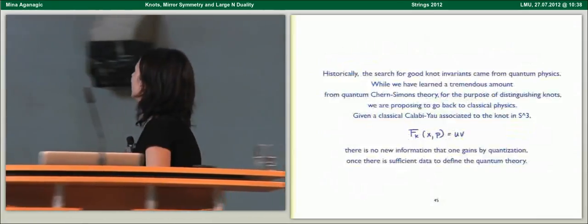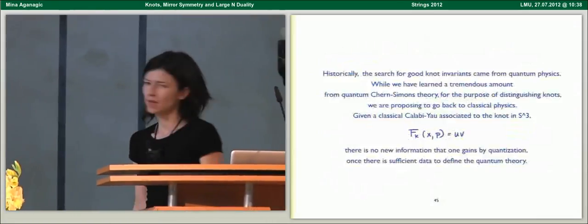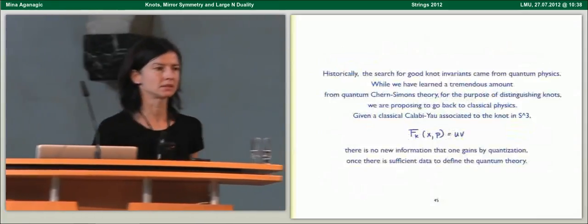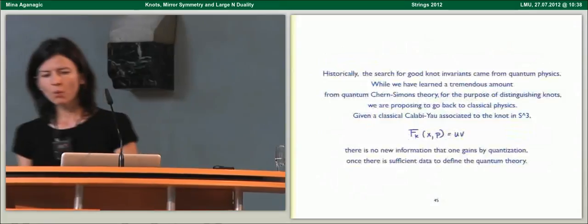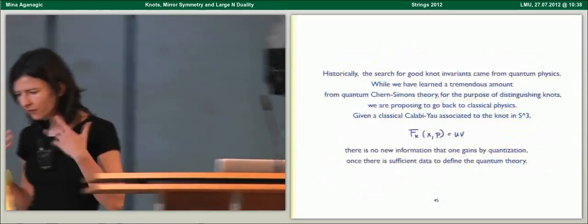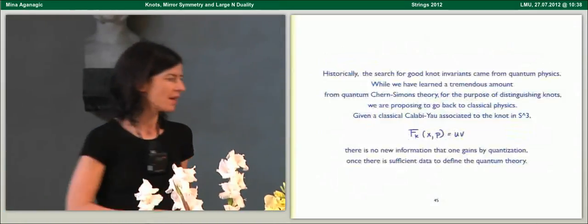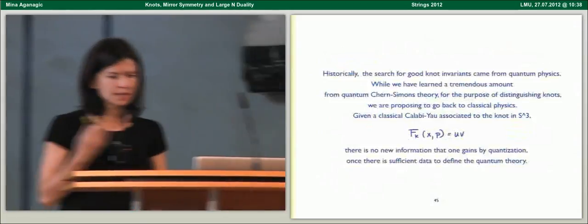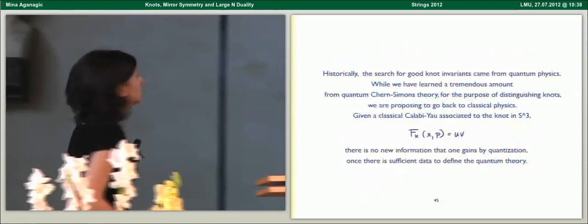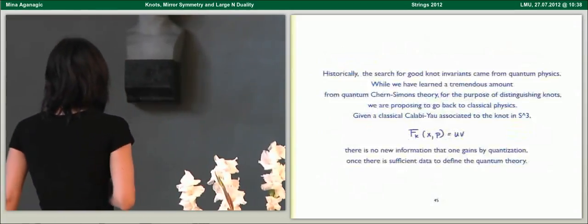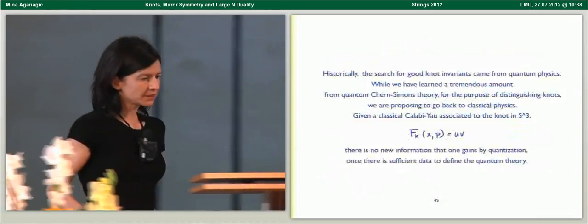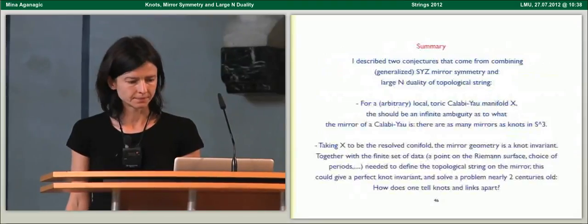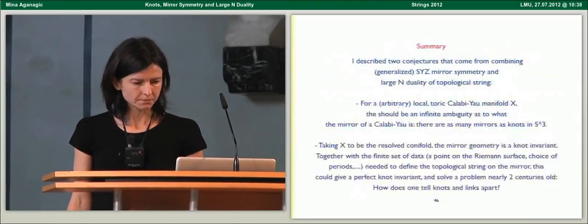Historically, the search for good knot invariants came from quantum physics, and we've learned a tremendous amount from Chern-Simons theory. However, what we are proposing here is that if your intent is just to distinguish knots, then one should consider going back to classical physics. Given a classical Calabi-Yau associated to the knot, one gains no new information once there is sufficient data to define the quantum theory.